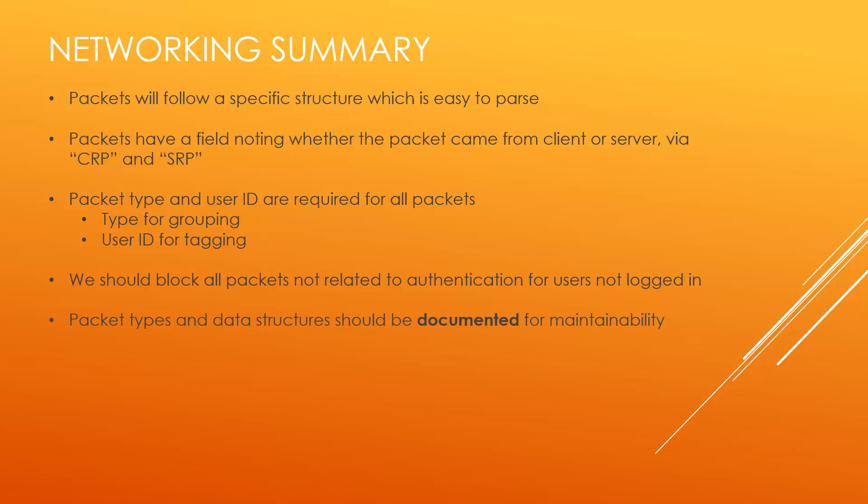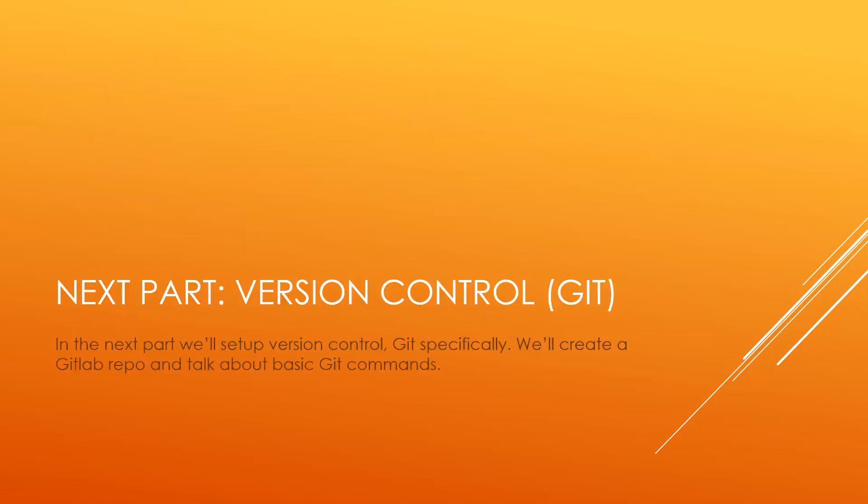Packet types and data structures should be documented for maintainability — a Word document or anything that documents what each type is for and the data structures for those packet types. This makes the code more maintainable and helps any developer who comes on later quickly get up to speed on how the networking is laid out. In the next part we'll cover version control using Git — we'll set up a GitLab private repository and talk about some basic Git commands. After that, we'll be ready to start working on the site and the game. See you in part 3.